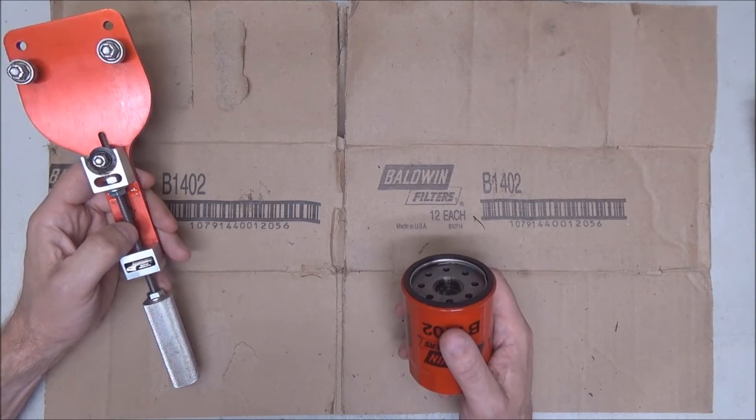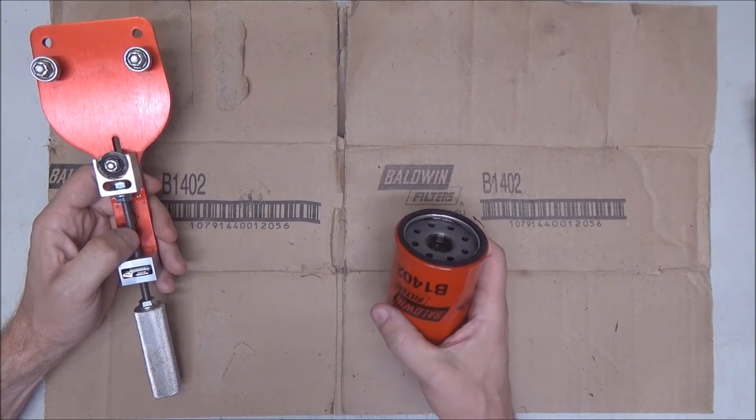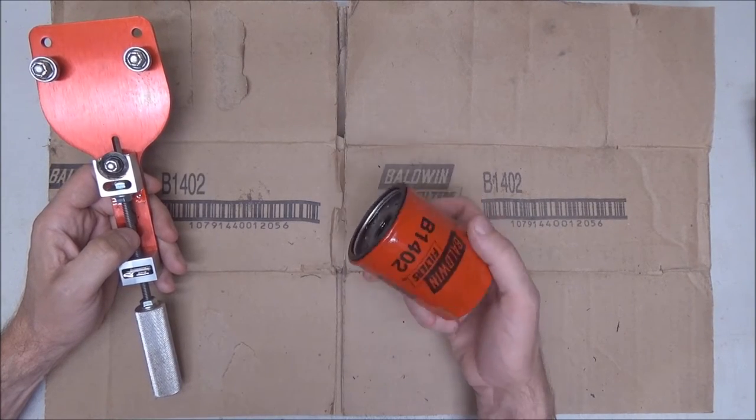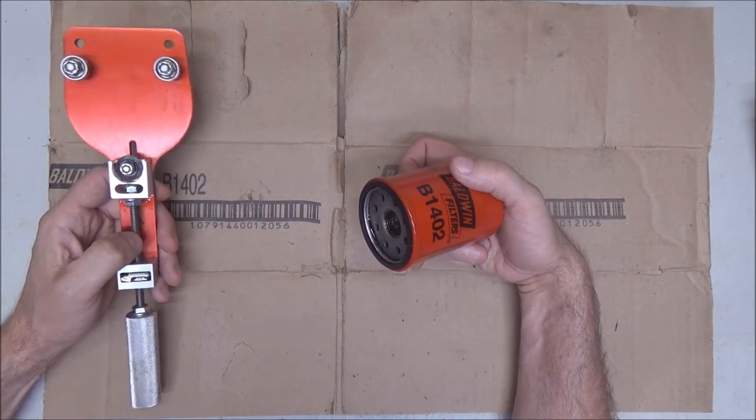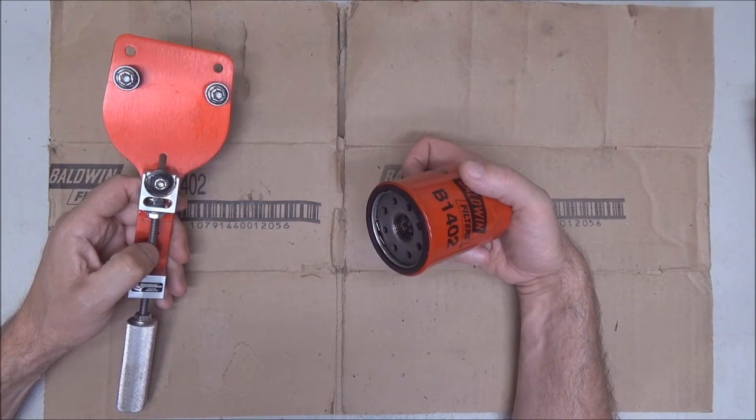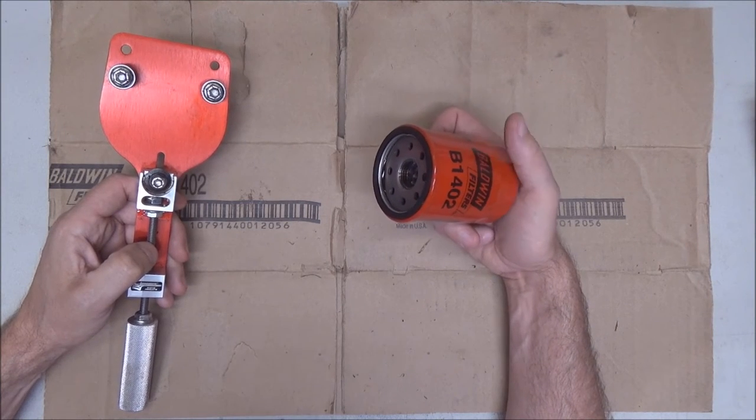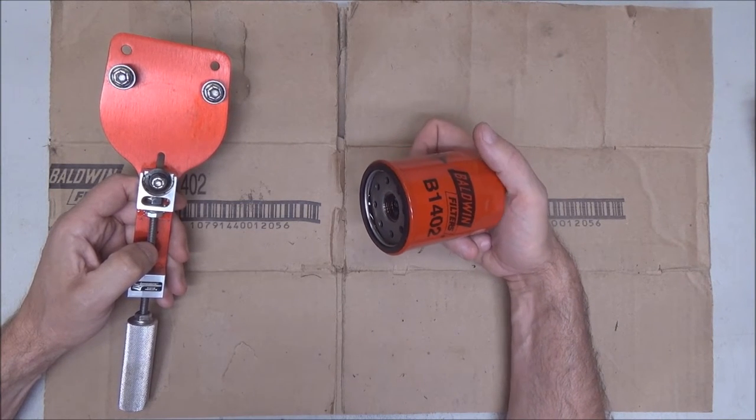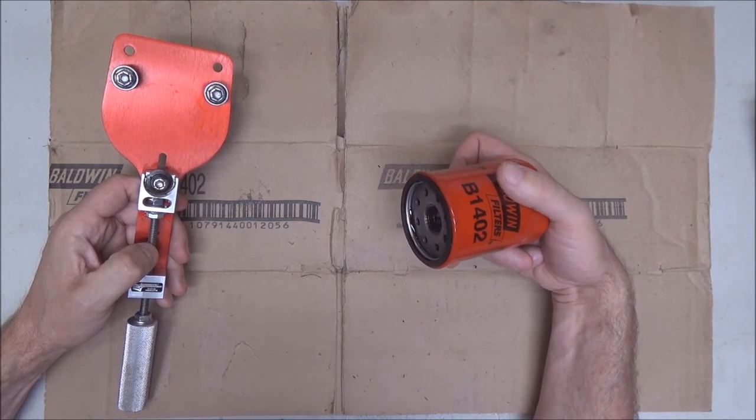Almost none of them stock them, they have to special order them, but I like Baldwin filters. Hastings filters are identical to Baldwin's, just painted white and say Hastings on them. Made in the exact same factory same specs, just different paint depending on whether they're making Baldwin's or Hastings that day.